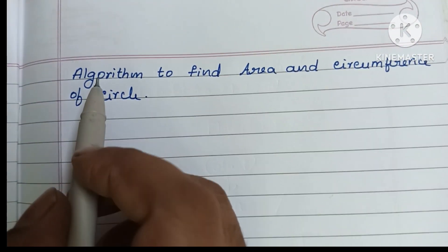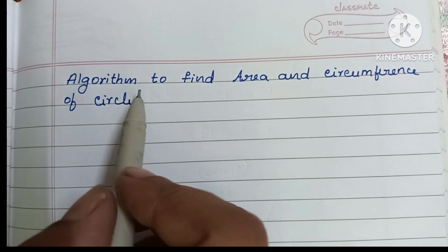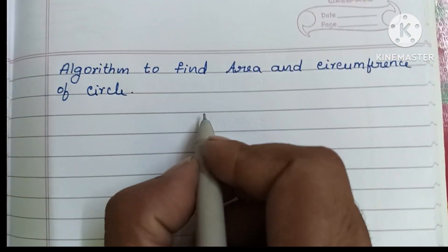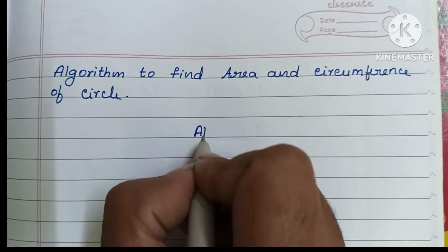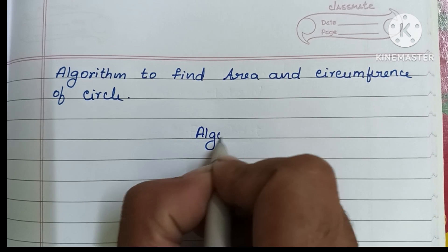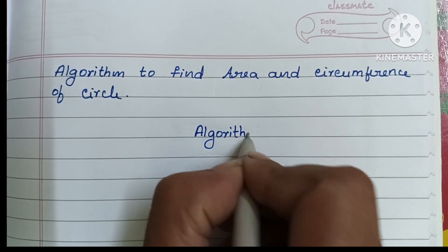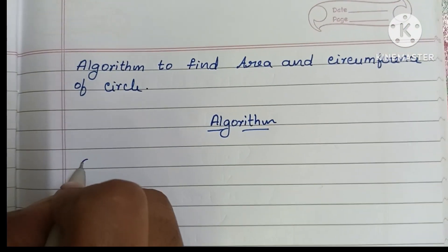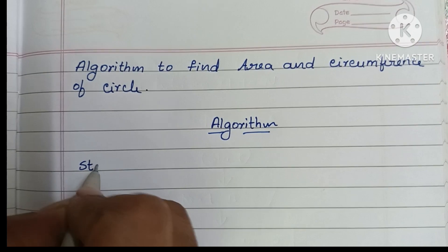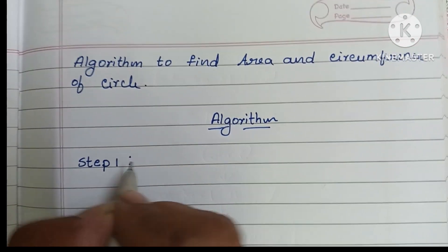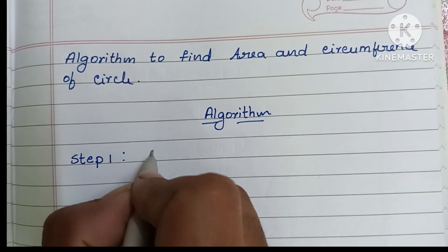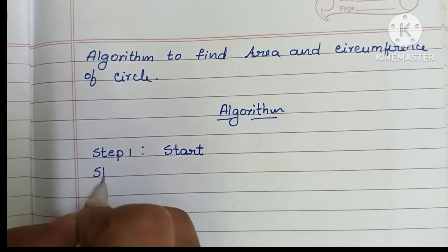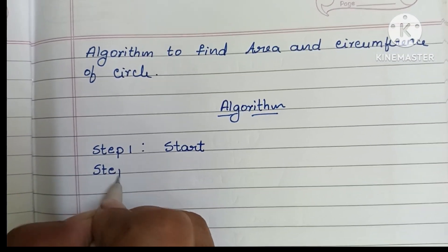Hi guys, in this video we are going to learn how to write an algorithm to find the area and circumference of a circle. An algorithm is a step-by-step process to solve a problem. Step 1: an algorithm always starts with a start statement, so first we have to write the start statement.